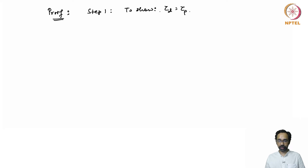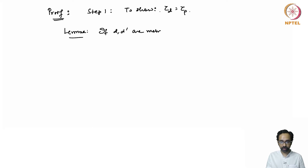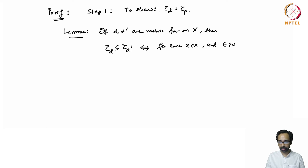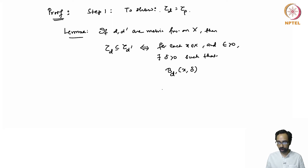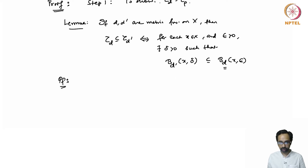The first step is to show that τ_d and τ_ρ agree, and for this we will use the following lemma. The lemma says: if d and d′ are metric functions on a set X, then τ_d′ is finer than τ_d if and only if for each x in X and ε > 0, there exists δ > 0 such that the δ-ball centered at x with metric d′ is a subset of the ε-ball centered at x with metric d. We prove this lemma first, then show τ_d = τ_ρ using it.